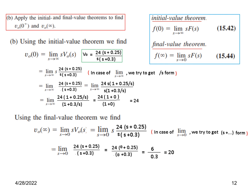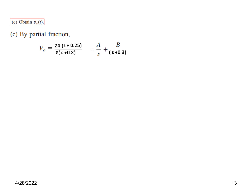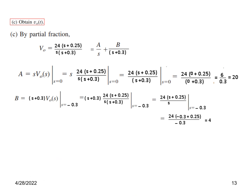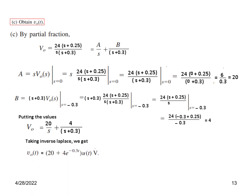For part three of the second problem, we find v0(t). V0(s) is already known. Using partial fraction decomposition, we write V0(s) as A/s plus B/(s + 0.3). Solving: A = 20 and B = 4. Taking the inverse Laplace transform gives v0(t) = 20·u(t) + 4·e^(-0.3t)·u(t) as the time-domain answer.